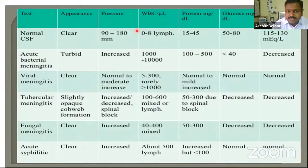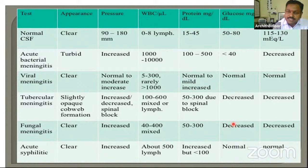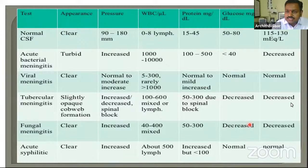You must know normal CSF findings and findings in various types of meningitis. Normal CSF pressure is 80–90 mmHg or 15–20 cm of water. Normal cells are lymphocytes only, up to 5 (upper limit 8). Protein is around 45 mg/dL. Glucose does not have a specific value — it should be two-thirds of plasma glucose, so always check blood glucose simultaneously. Chloride is around 115–130 mEq/L.